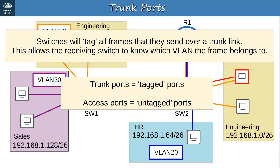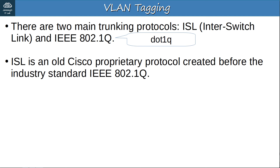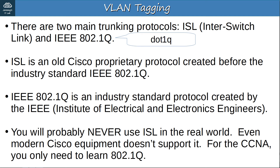There are two main trunking protocols: ISL (Inter-Switch Link) and IEEE 802.1Q, usually called dot1Q. ISL is an old Cisco proprietary protocol created before the industry-standard 802.1Q. Dot1Q is an industry-standard protocol created by the IEEE — the same organization behind 802.3 Ethernet. You will probably never use ISL in the real world; even modern Cisco equipment doesn't support it. For the CCNA, you only need to learn dot1Q — just know what ISL is.